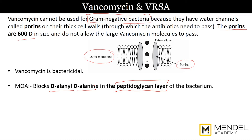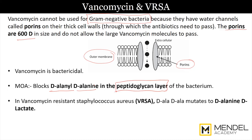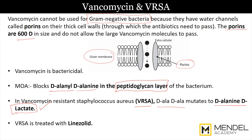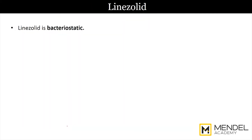This is important because in vancomycin-resistant Staphylococcus aureus (VRSA), a small mutation takes place where d-alanine d-alanine, as it is called, mutates to d-alanine d-lactate. This is extremely high yield. When you encounter VRSA, the treatment of choice is linezolid.